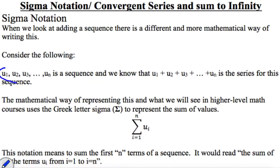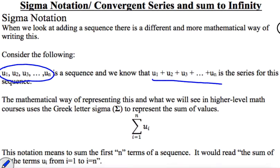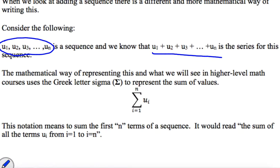If we consider this sequence here, we've got u1, u2, u3, and so on, all the way up to un. The series of that would be u1 plus u2, and so on. The more mathematical way of writing this is using the Greek letter sigma. This means the sum of the values — we've got i equals 1 at the bottom and n at the top. The i equals 1 part is telling us what number we're starting at, so here we're starting at the first term and going to the nth term. This notation reads: the sum of all the terms ui from i equals 1 to i equals n.